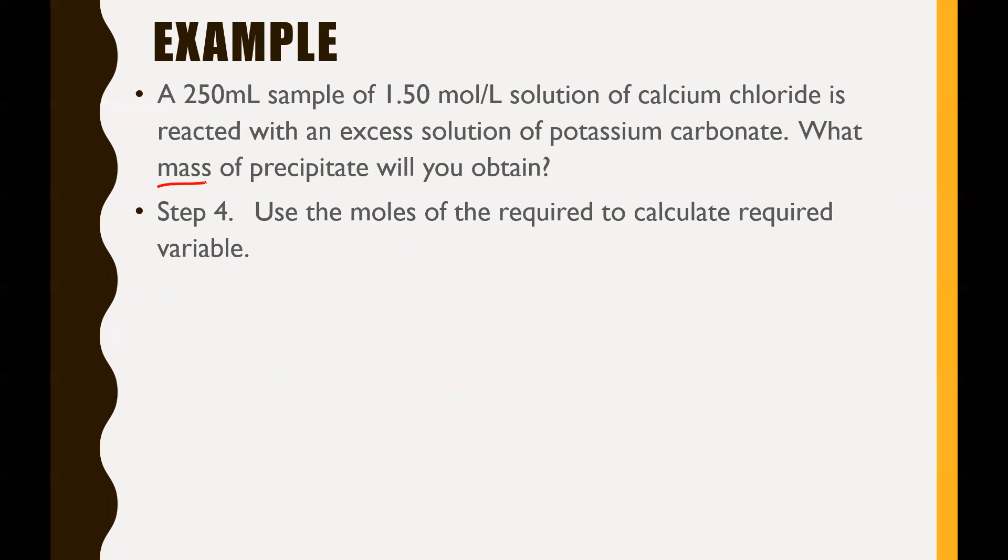Last part of the question: what is the mass of the precipitate? We know how many moles of precipitate we have. To turn that into mass, we need to find the molar mass of calcium carbonate. Use your periodic table. We have one calcium, one carbon, and three oxygens. Calcium is 40.08 plus one carbon which is 12.01, and then three oxygen, so three times 16.00. That equals a grand total of 100.09 g/mol.